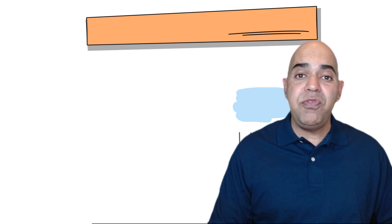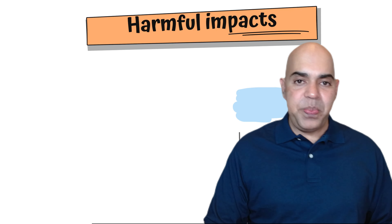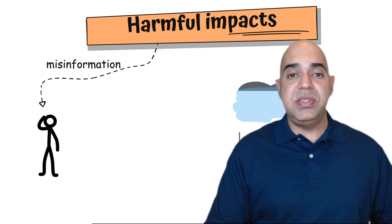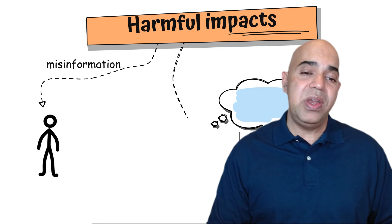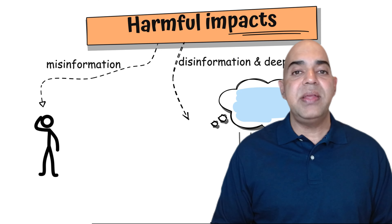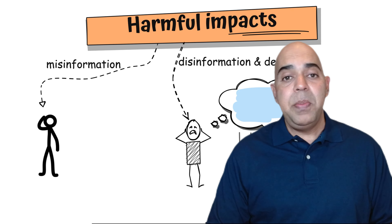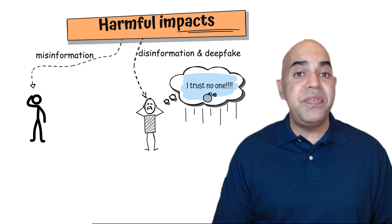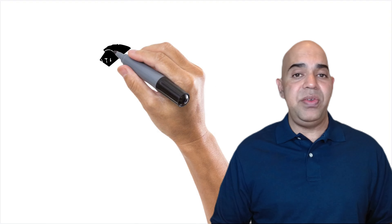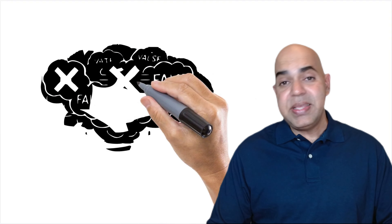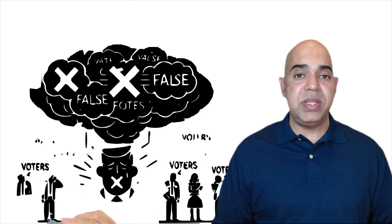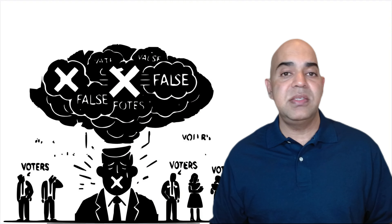What are the harmful impacts of misinformation, disinformation, and deepfakes on elections? The spread of false information can have severe consequences. Misinformation can cause confusion and reduce voter turnout. Disinformation and deepfakes have much more severe consequences, manipulating public opinion and altering election outcomes. The erosion of trust in the electoral process is a significant risk, leading to skepticism and disengagement among voters, and candidates can suffer significant harm to their reputations.